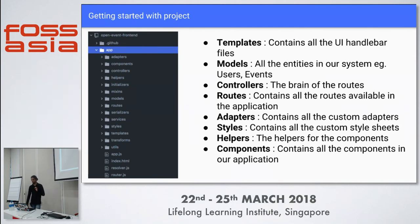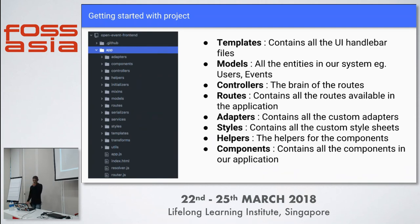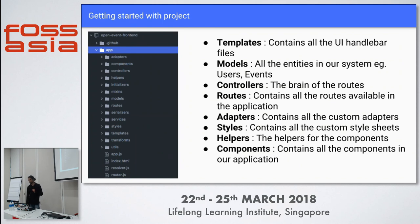Under adapters, we have custom adapters. Ember lets us create custom adapters if we have endpoints that don't follow the standard convention. For example, if we have both REST API and JSON API on the same server, we can create custom adapters to make calls to those endpoints. Styles will have custom stylesheets for the components and routes.